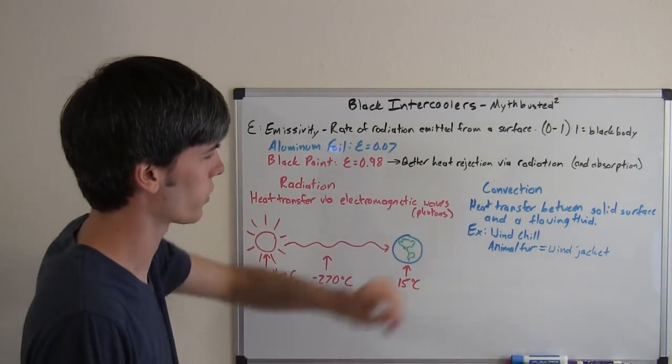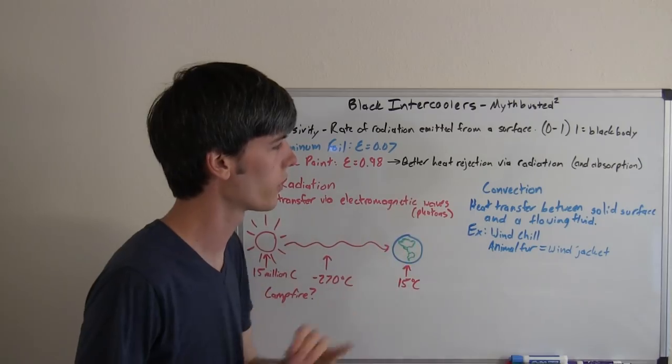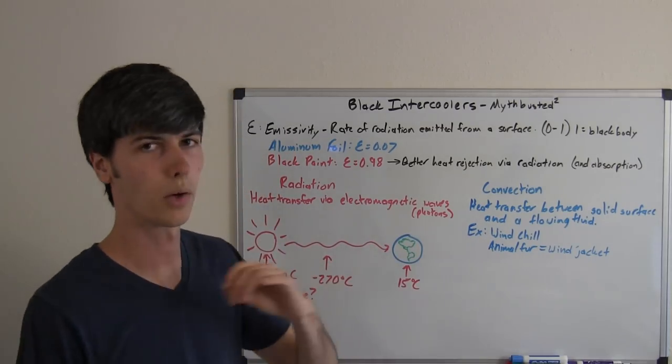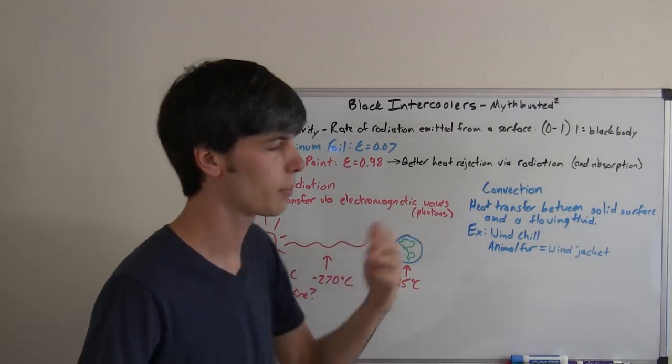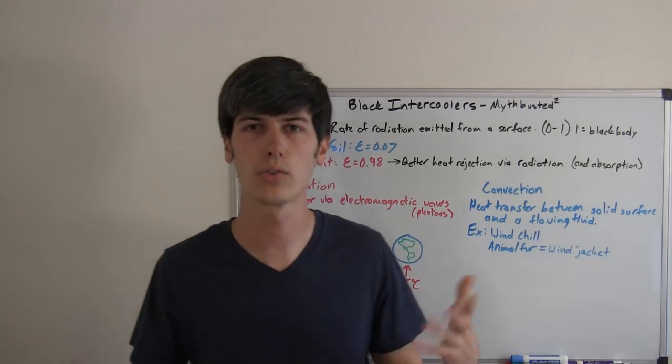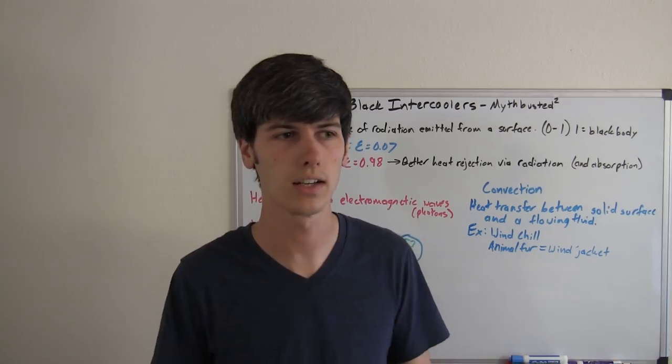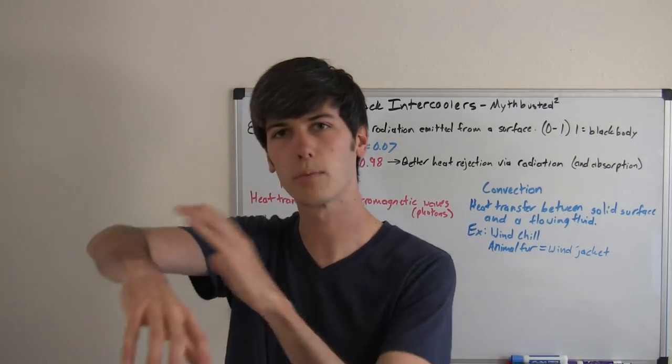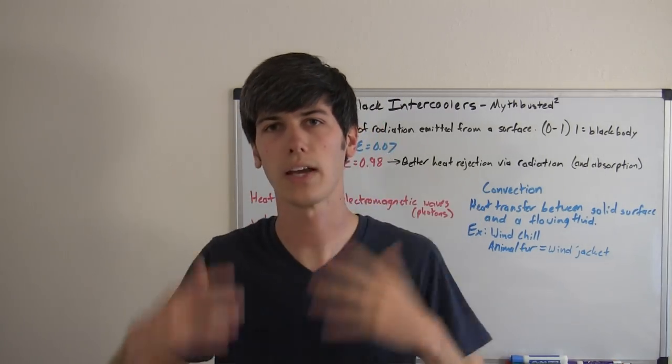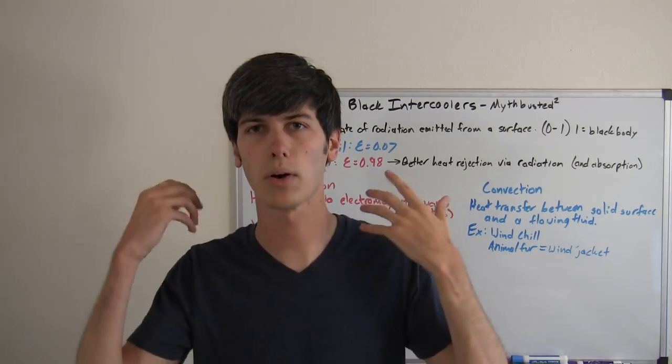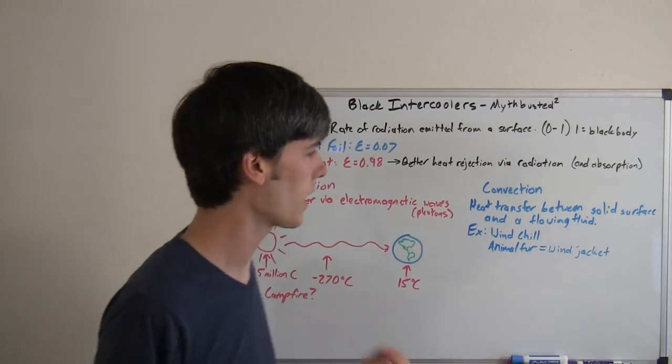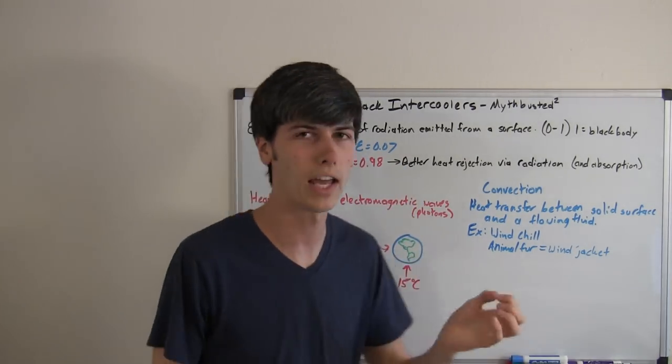Let's talk about convection. Now, convection is heat transfer between a solid surface and a flowing fluid. A great example is wind chill. You'll hear on the news, wind chill, it's actually 30 degrees outside, but with wind chill, it feels like 15. And the reason this is because as the wind is blowing past your arm or your face or whatever, it's taking away more heat than if the air were to just be stagnant.